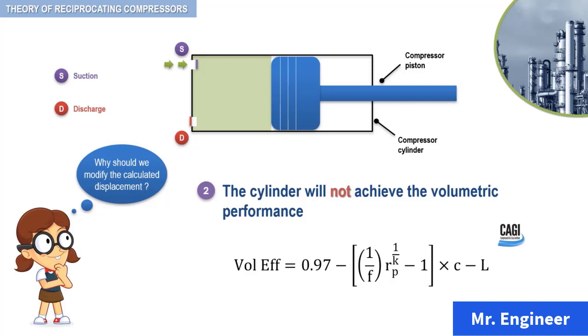The term L that you can see here is added at the end to allow for gas slippage past the piston rings in the various types of construction. If, in the course of making an estimate, a specific value is desired, you can use 0.03 for lubricated compressors and 0.07 for non-lubricated machines.